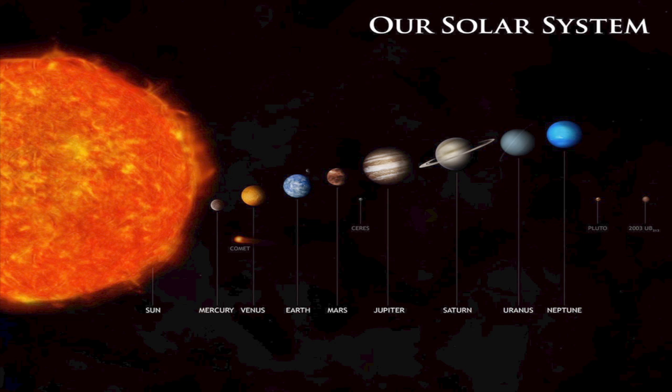30 degrees goes into 360 twelve times, so for 6 out of 8 of the planets to follow this 1 in 12 chance would be highly unlikely if we did not take the combined momentum theory into consideration.